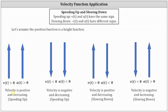So because the velocity is positive and increasing, the particle is speeding up. And if both the velocity and acceleration are less than zero, the velocity is negative and decreasing, and therefore the particle is speeding up. So again, when the velocity and acceleration have the same sign, the particle is speeding up.